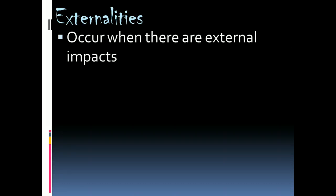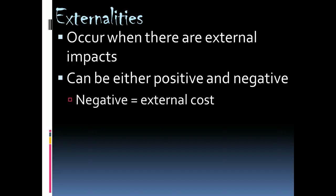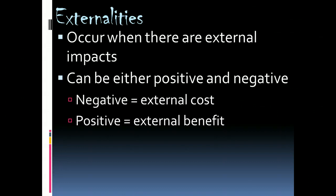Externalities exist anytime there are external impacts to someone's decision, and those impacts can be both positive or negative. A negative externality would be an external cost — anything that hurts other people as a result of my decision. Whereas positive externalities are things that help other people based on my decision.